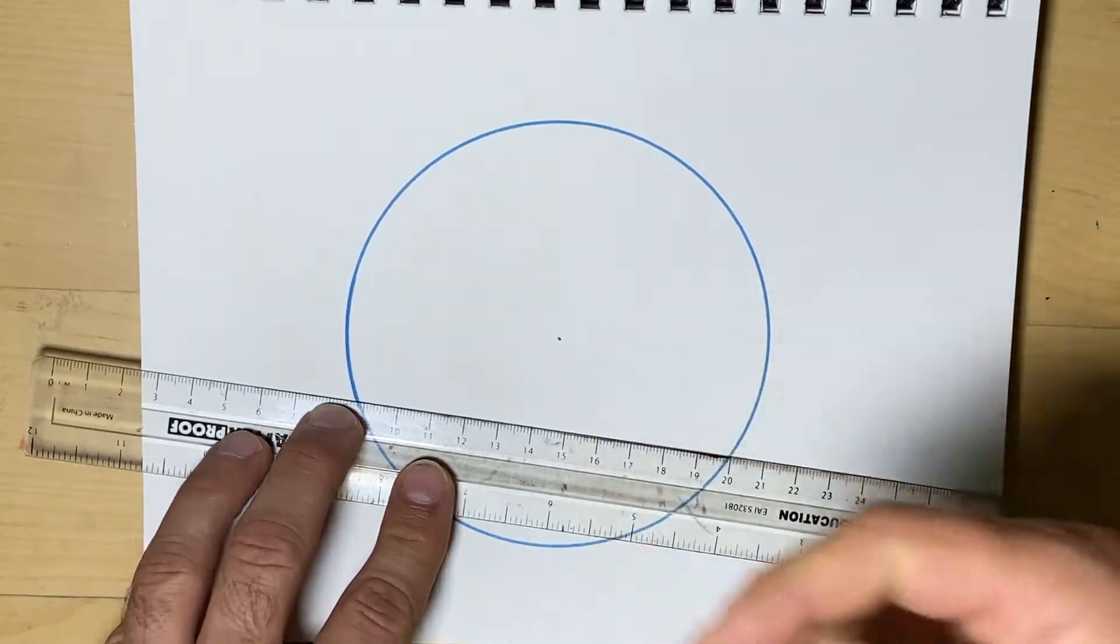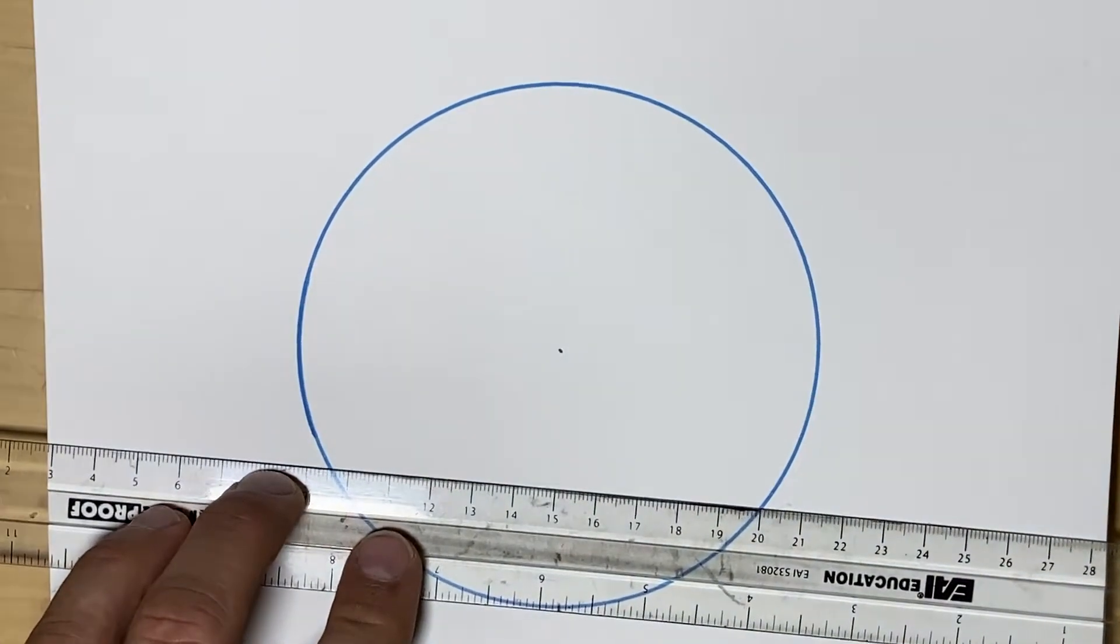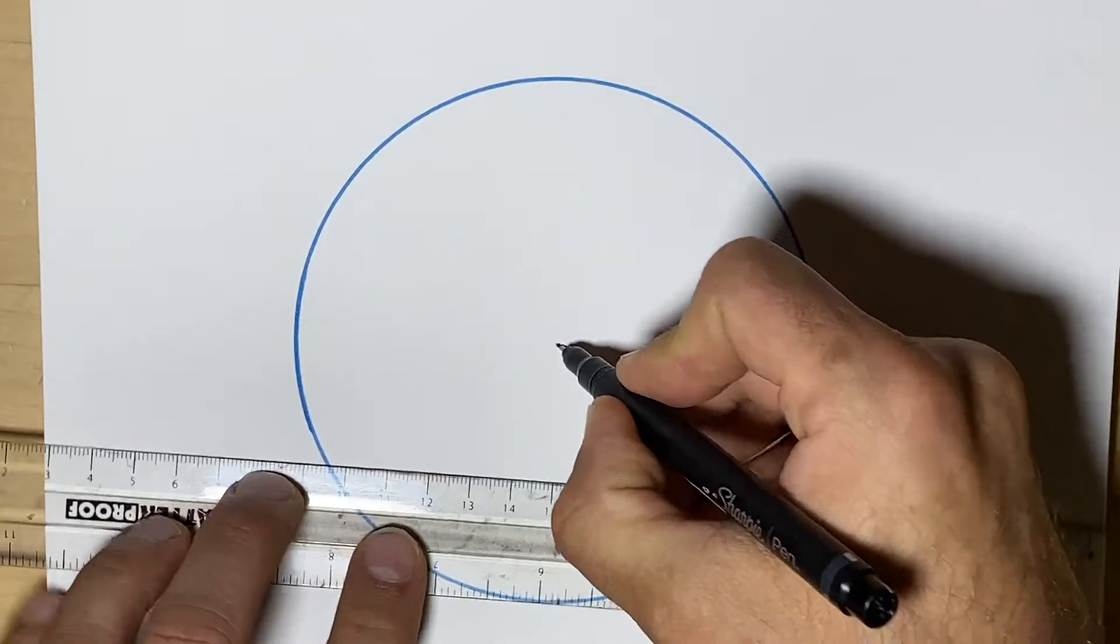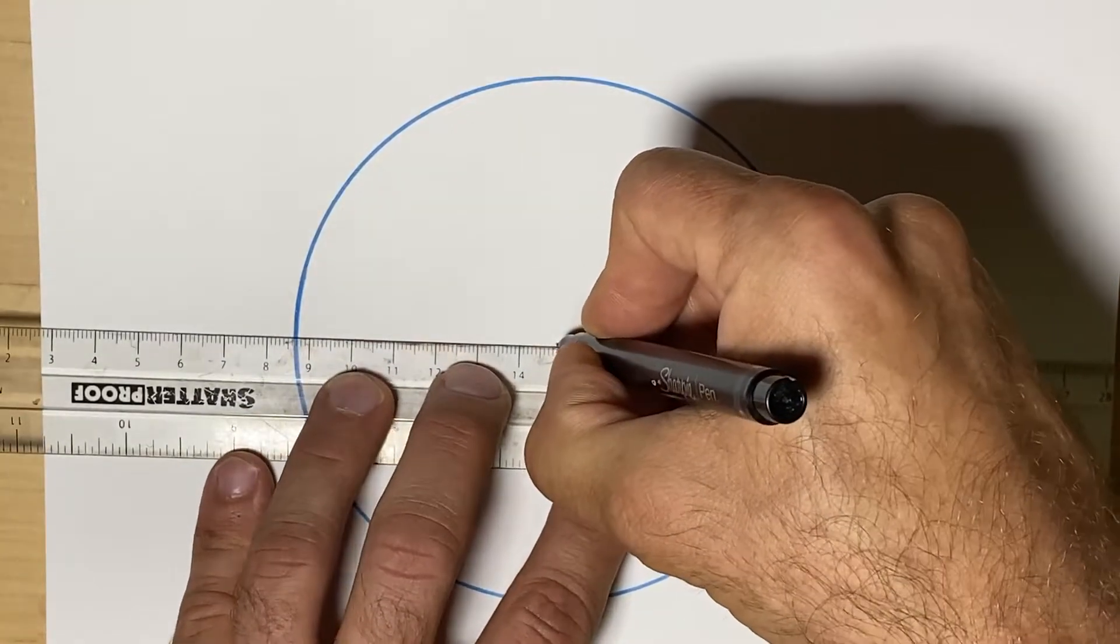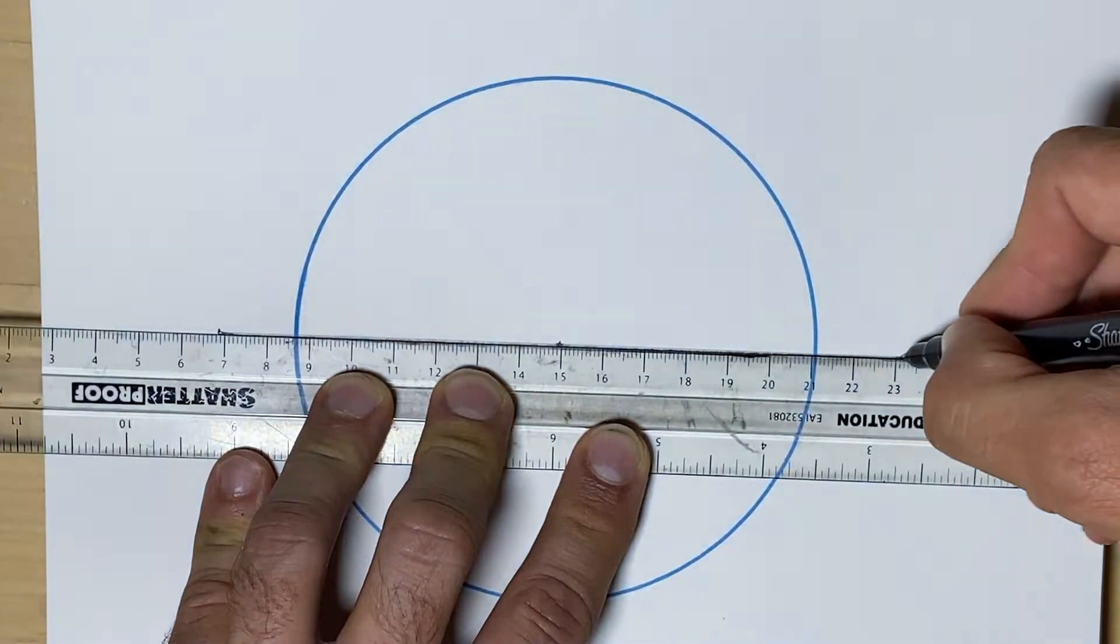So for accuracy, I like to put my pen on the center first, then line up my ruler and it makes it more accurate, and draw a line, and that's it.